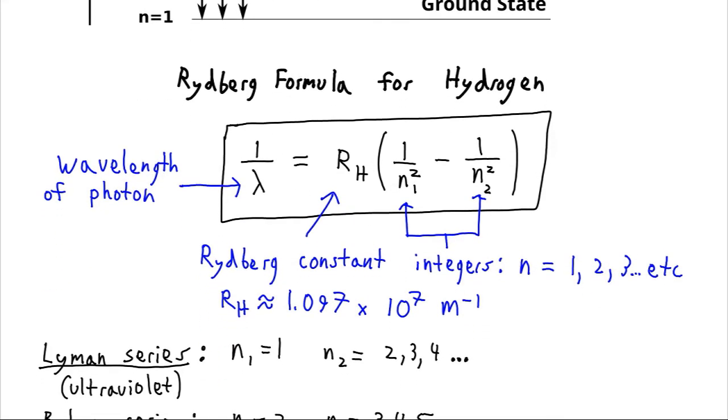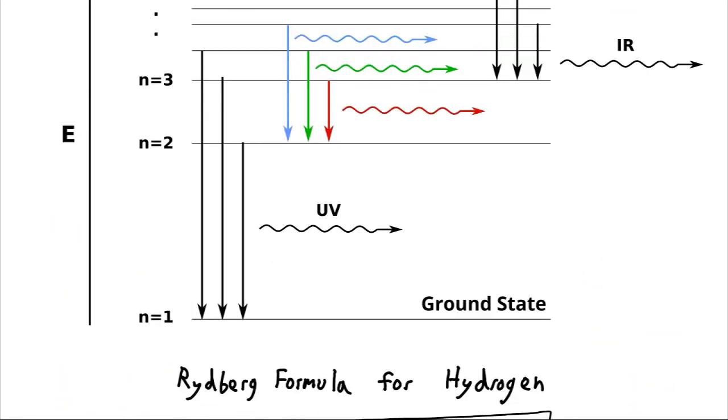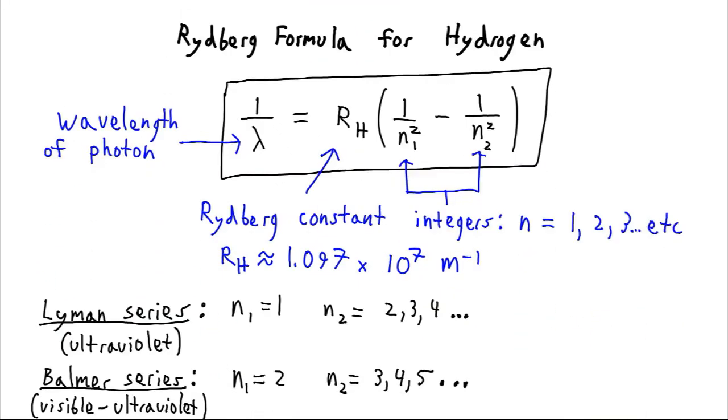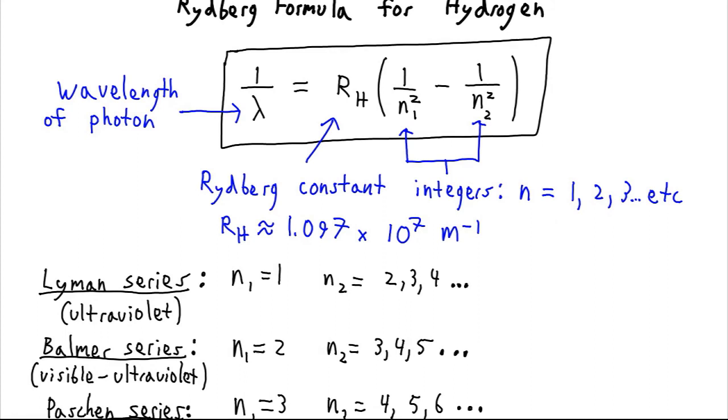So, this gives a number of series. If we set n equals 1 and let the second n vary from 2, 3, 4, etc. So, that's what we considered in this first case. Then these bands of light are called the Lyman series. They're all in the ultraviolet.